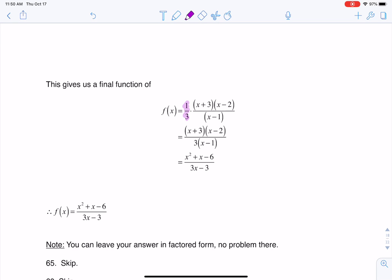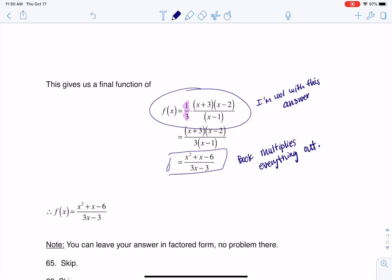If you watched my video for number 53, I'm totally fine if you leave your answer that way. But your book likes to multiply everything out. I'm cool with this. But your book multiplies everything out. That's just how they do it. So if you want to match your book answer, you're just going to have to distribute everything.